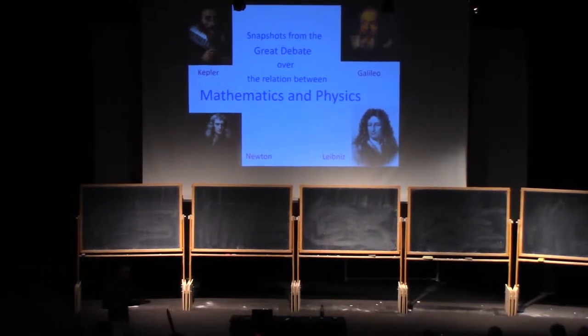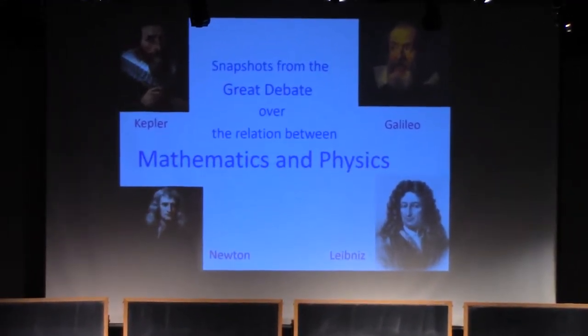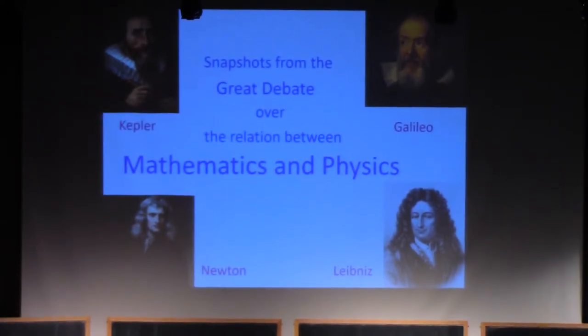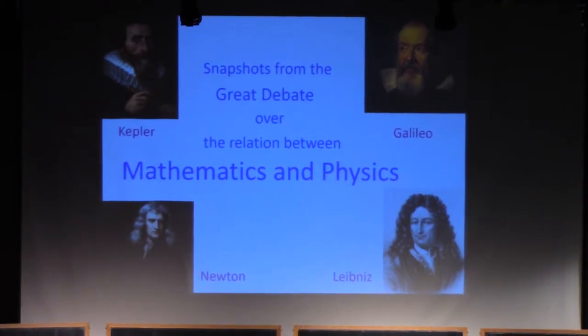Nowadays, in our universities, we have departments of mathematics and departments of physics. We don't have departments of natural philosophy. Indeed, the mathematicians and the physicists don't always talk to each other. So we could ask, when did natural philosophers become either physicists or mathematicians?